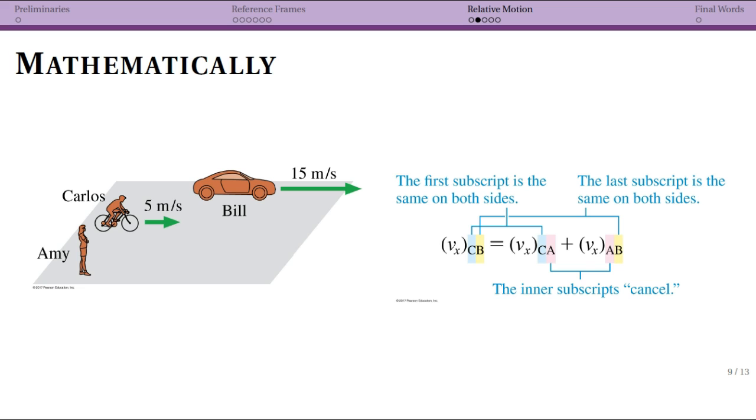So now I want to get a little bit into the math, and this is where the notation is going to come in. And this situation I'm going to work through somewhat explicitly. It is the same one in the book if you are looking at the book. And we actually have three people here. We have Amy, Bill, and Carlos. Bill is in the car, Carlos is on a bicycle, and Amy is standing on the ground.